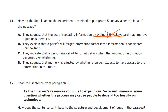Answer B explains that a person will forget information faster if the information is considered unimportant. I don't think it was about importance versus unimportance. Answer C indicates that a person may start to forget details when the amount of information becomes overwhelming — but who said 'overwhelming' in that paragraph? I could see students jumping at B or C, but it was really about whether the information was going to be saved or not saved. That was the actual experiment.